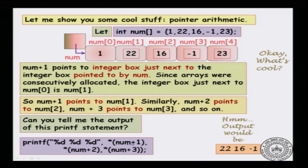In this printf statement we have used two concepts. One is getting to a different pointer from a given pointer using the pointer arithmetic operator plus. The second operator is star on a given pointer. Plus will tell you to go to the next integer location, and star will tell you, for a given integer pointer, give me the value in that location.